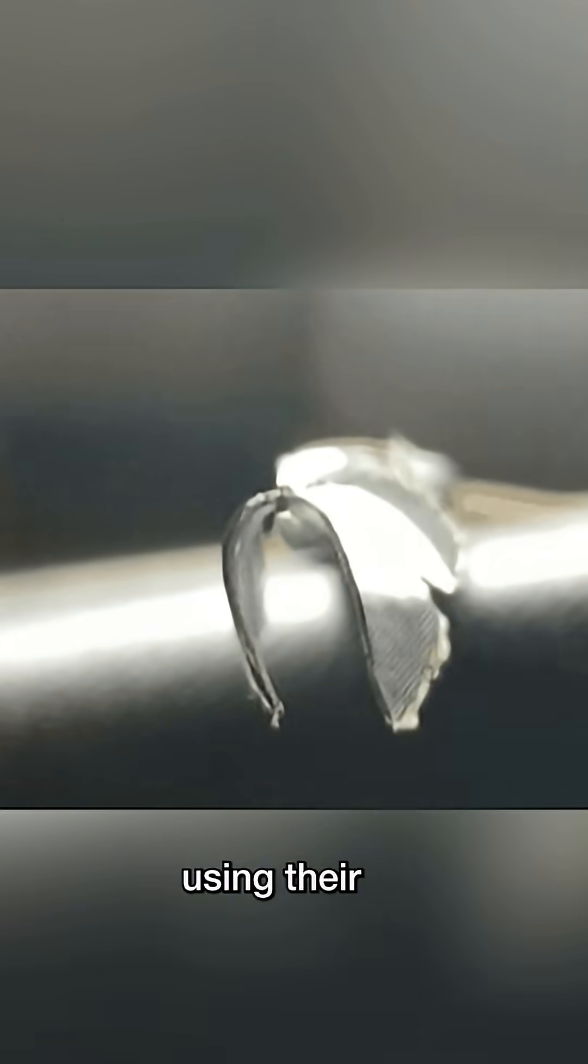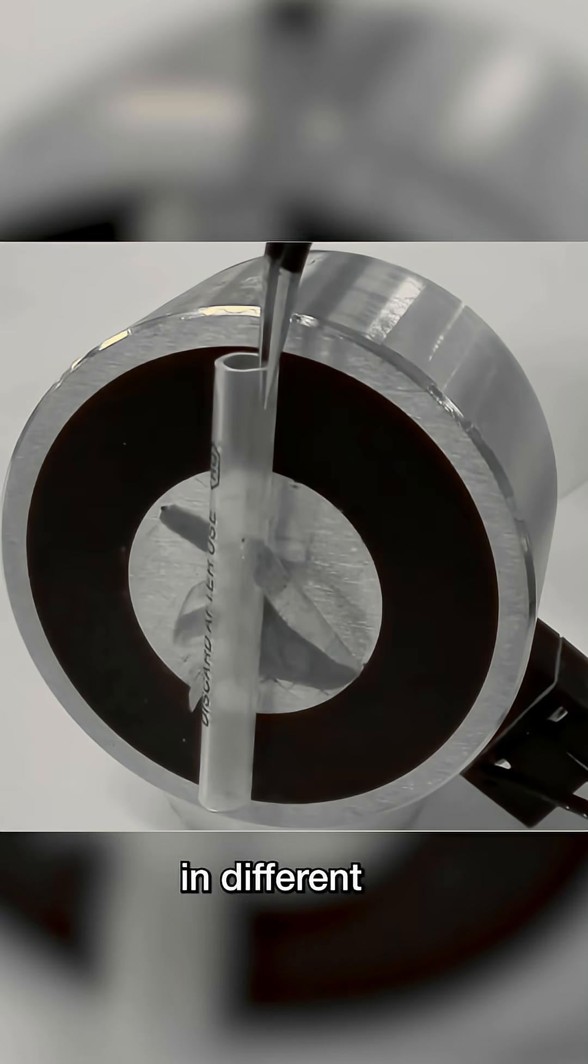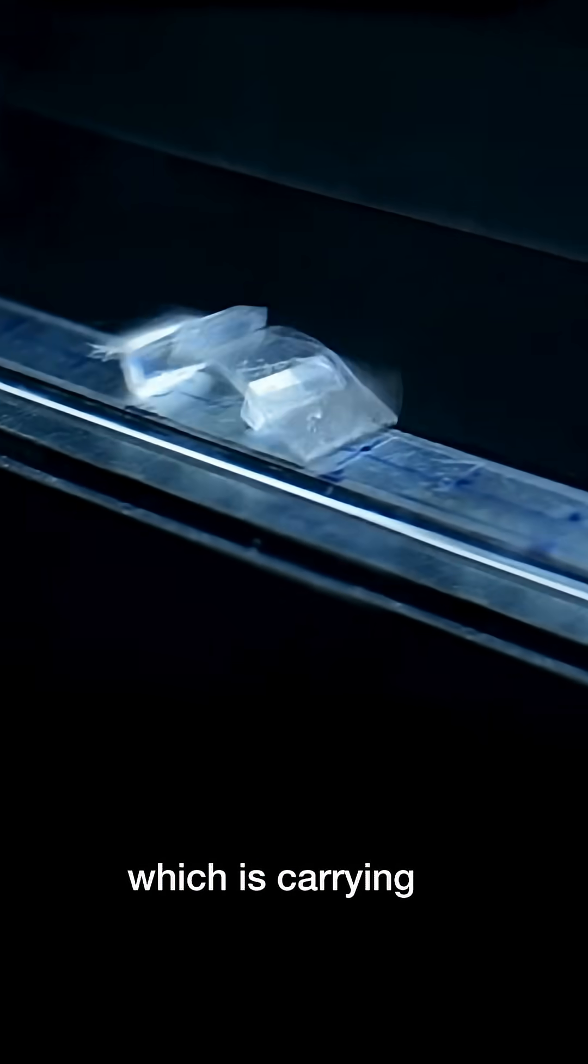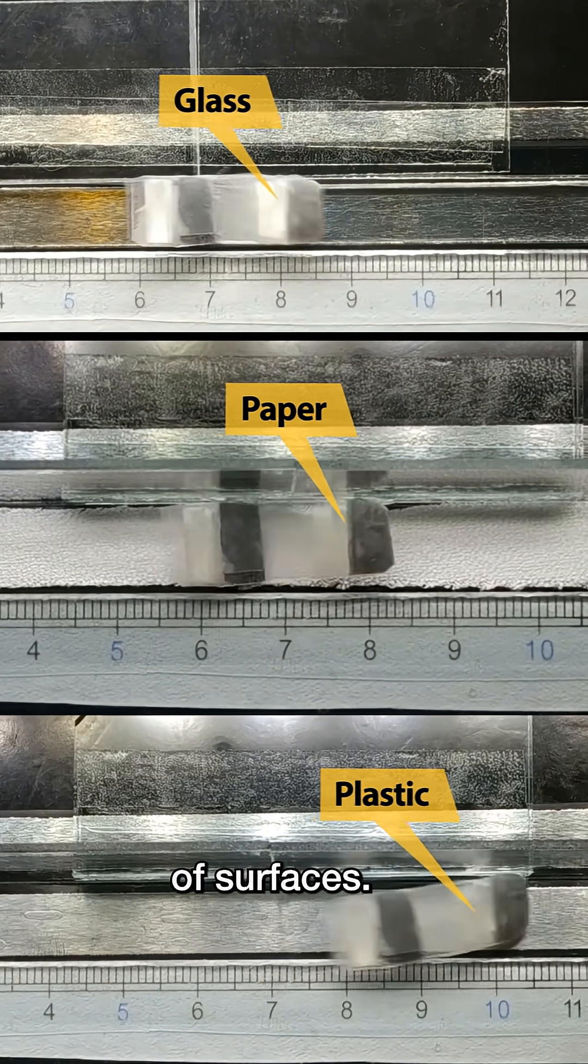The research team experimented with using their magnetic film as the actuators in different robot designs, like this inchworm, which is carrying a small weight on its back. Here's the inchworm hustling across three different types of surfaces.